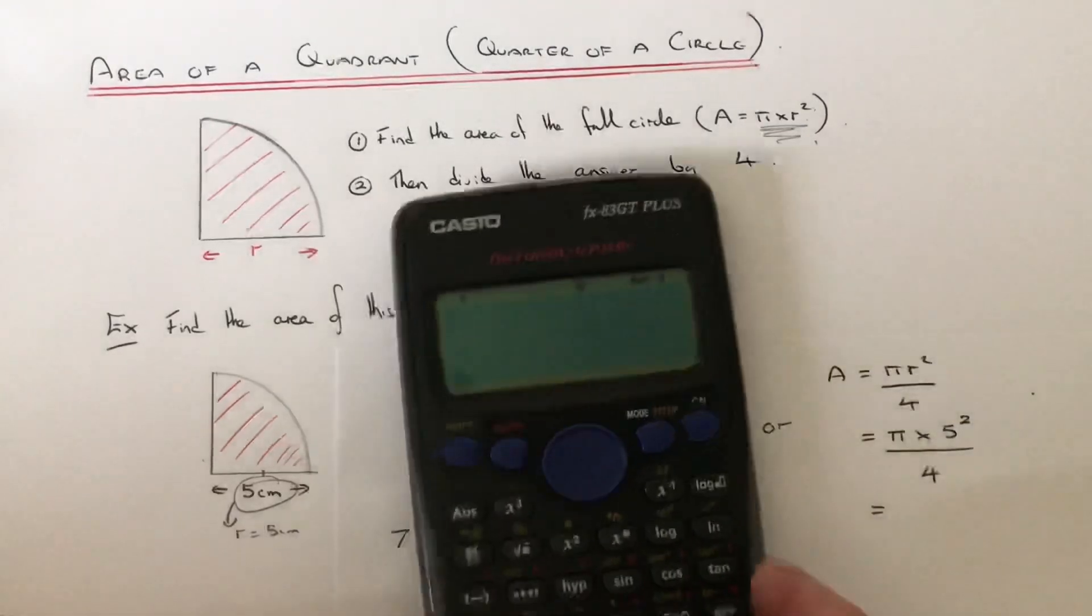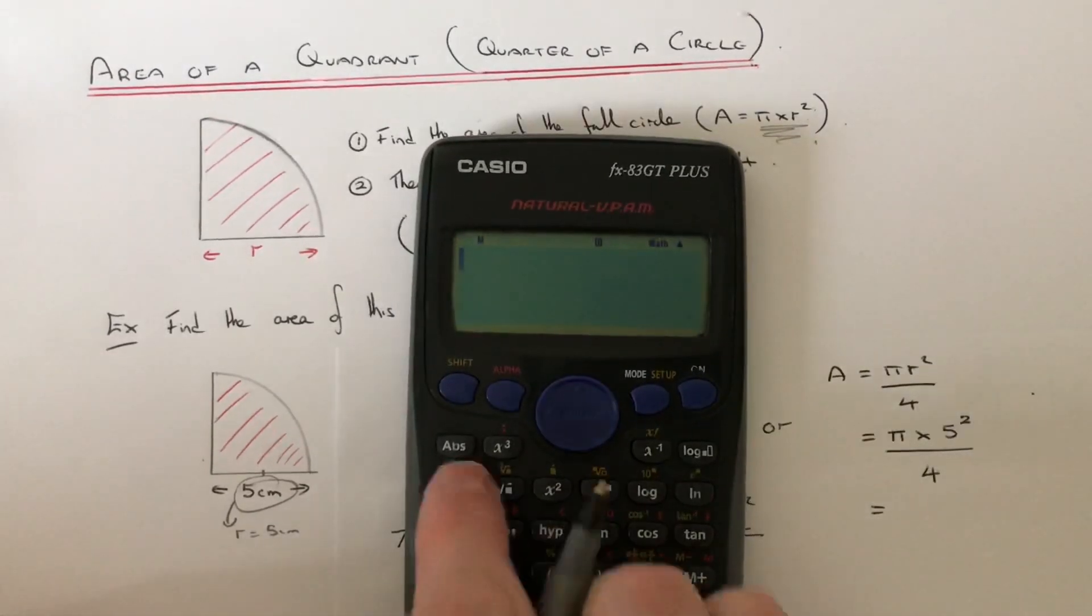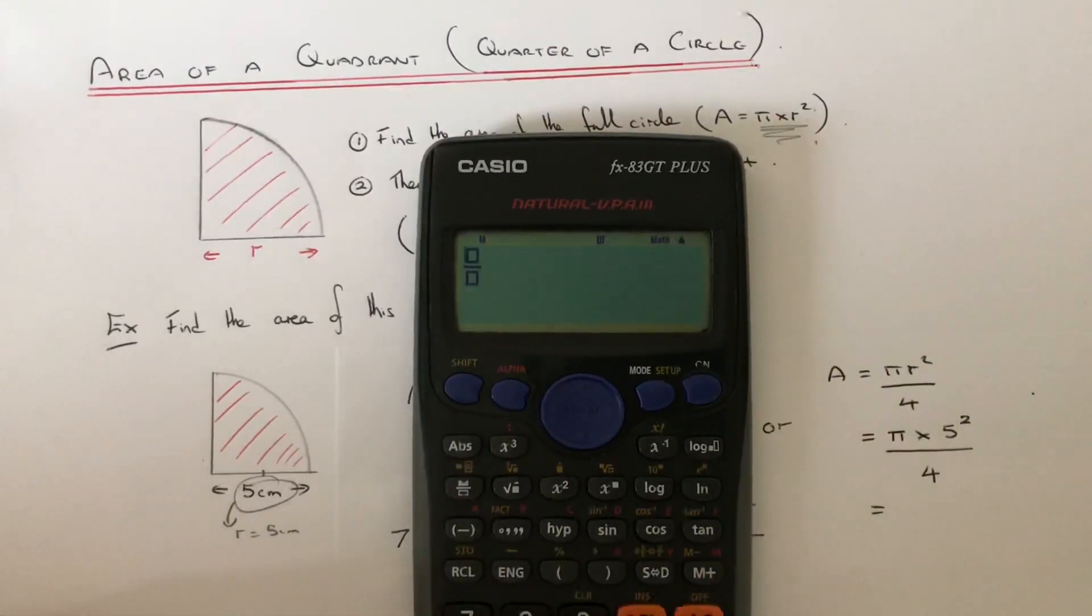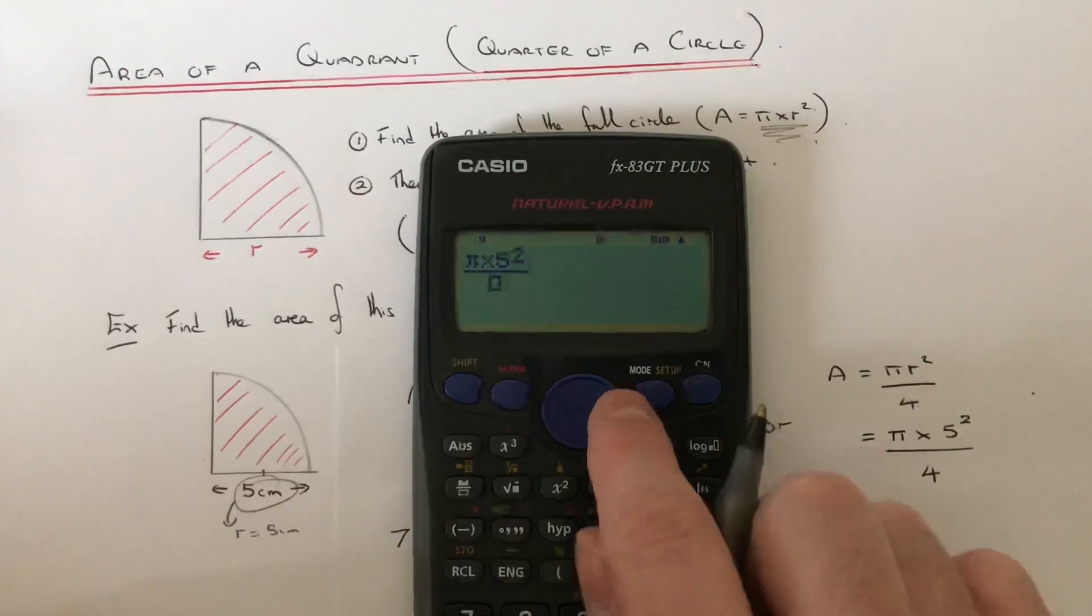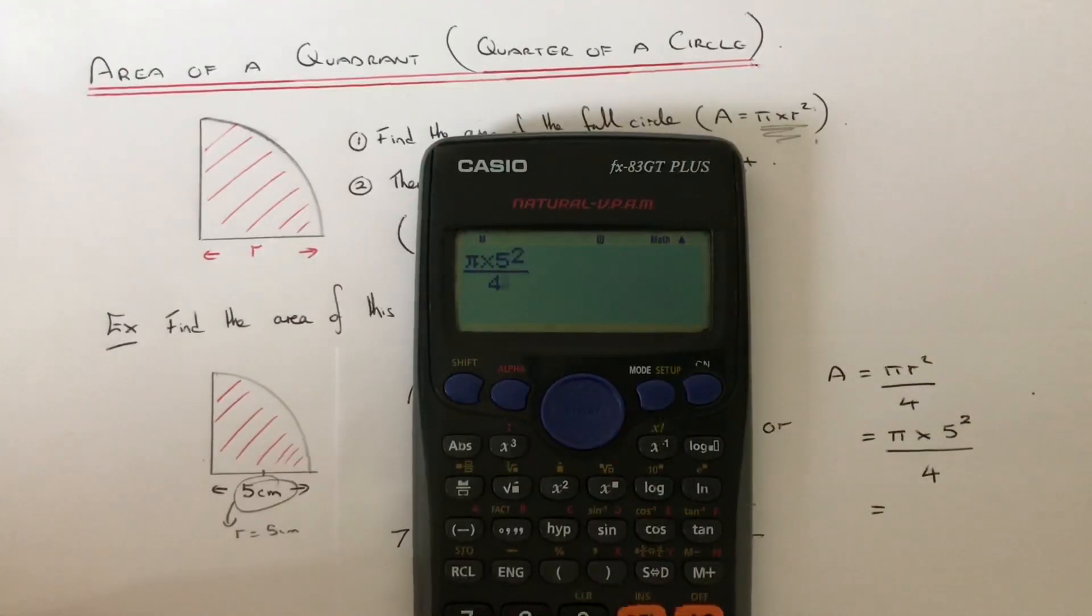So if you get your calculator, make sure you hit your fraction button first. So shift pi times 5 squared. And we've got to divide that by 4. So again we get 19.63 centimeters squared.